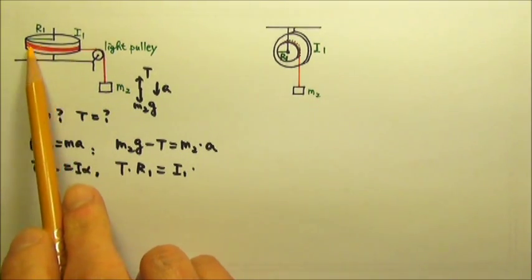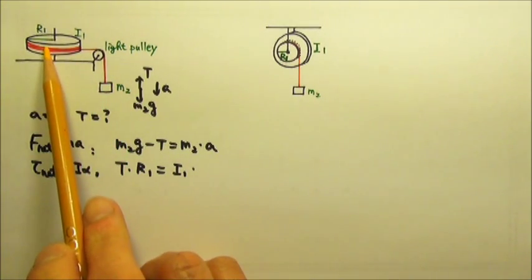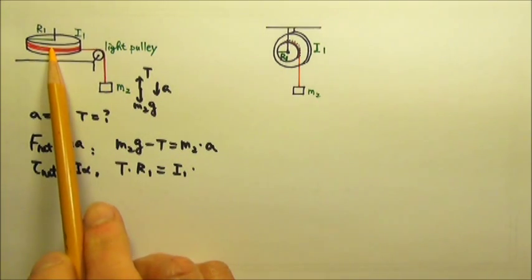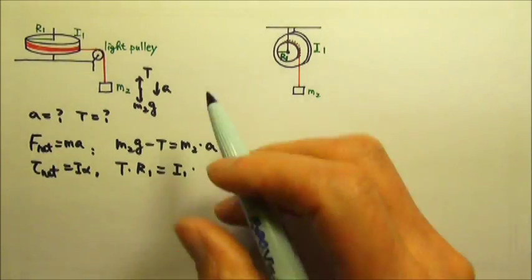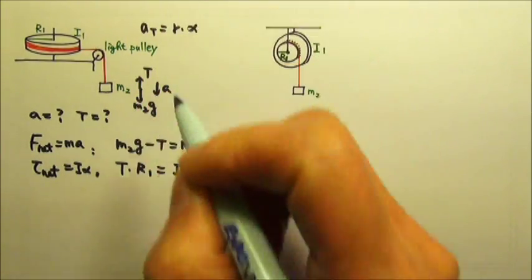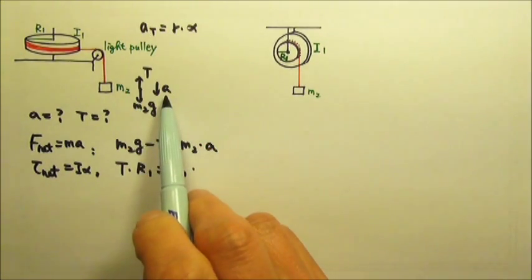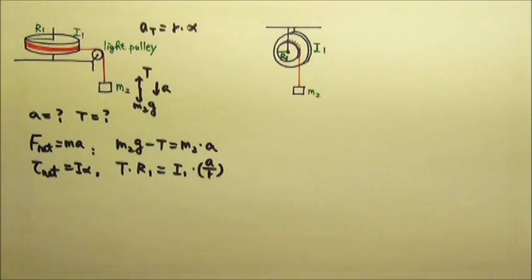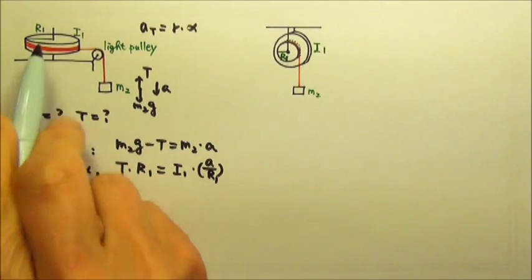Because they are connected by this string, when this string goes down by 1 meter, that string pulls by 1 meter. The linear acceleration equals the tangential acceleration over there. Since the tangential acceleration is R times alpha, we can replace alpha with A over R. This R is R1 because that's where the string wraps around.